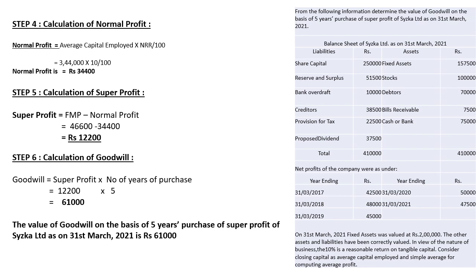Step 6 — calculation of goodwill. Formula: Goodwill = Super Profit × Number of years of purchase = 12,200 × 5 = 61,000. Therefore the value of goodwill on the basis of five years' purchase of super profit of Cycle Limited as on 31st March 2021 is 61,000.